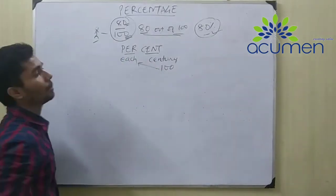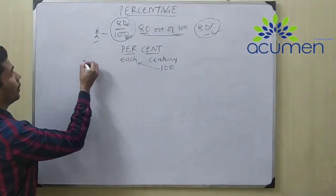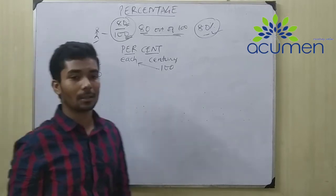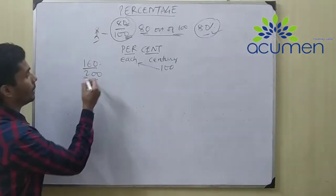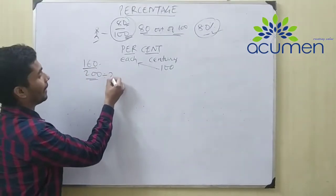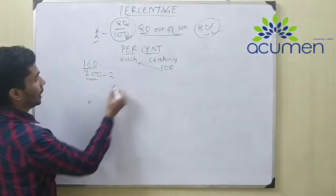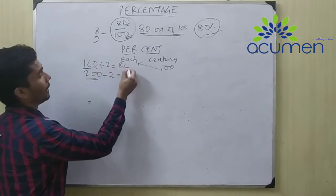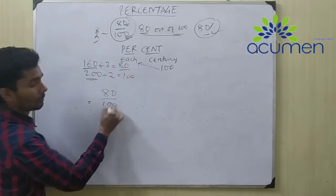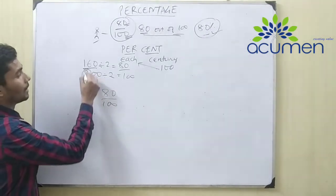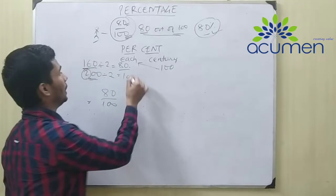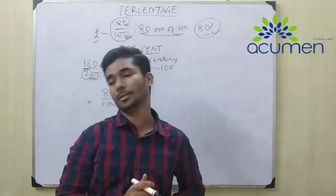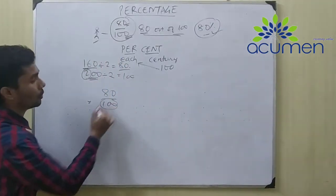Suppose a student got 160 out of 200. We cannot say that is 160%, because the base is 200, not 100. We have to make the base equal to 100. By dividing both by 2, the denominator becomes 100 and the numerator becomes 80 — so it is again 80 upon 100, which is 80%. So always, if the base is 100, only then can you call it a percentage. When the base is something other than 100, you must first reduce it to 100.